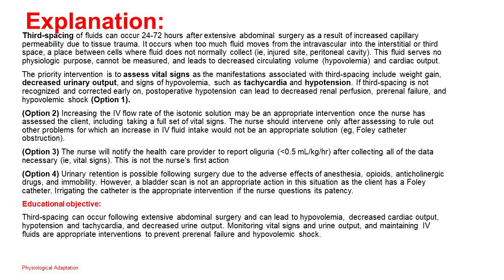Option 2: Increasing the IV flow rate may be an appropriate intervention once the nurse has assessed the client, including taking a full set of vital signs. The nurse should intervene only after assessing to rule out other problems, e.g., Foley catheter obstruction. Option 3: The nurse will notify the healthcare provider to report oliguria (less than 0.5 mL/kg/hour) after collecting all necessary data, i.e., vital signs. This is not the nurse's first action. Option 4: A bladder scan is not appropriate in this situation as the client has a Foley catheter. Irrigating the catheter is the appropriate intervention if the nurse questions its patency.